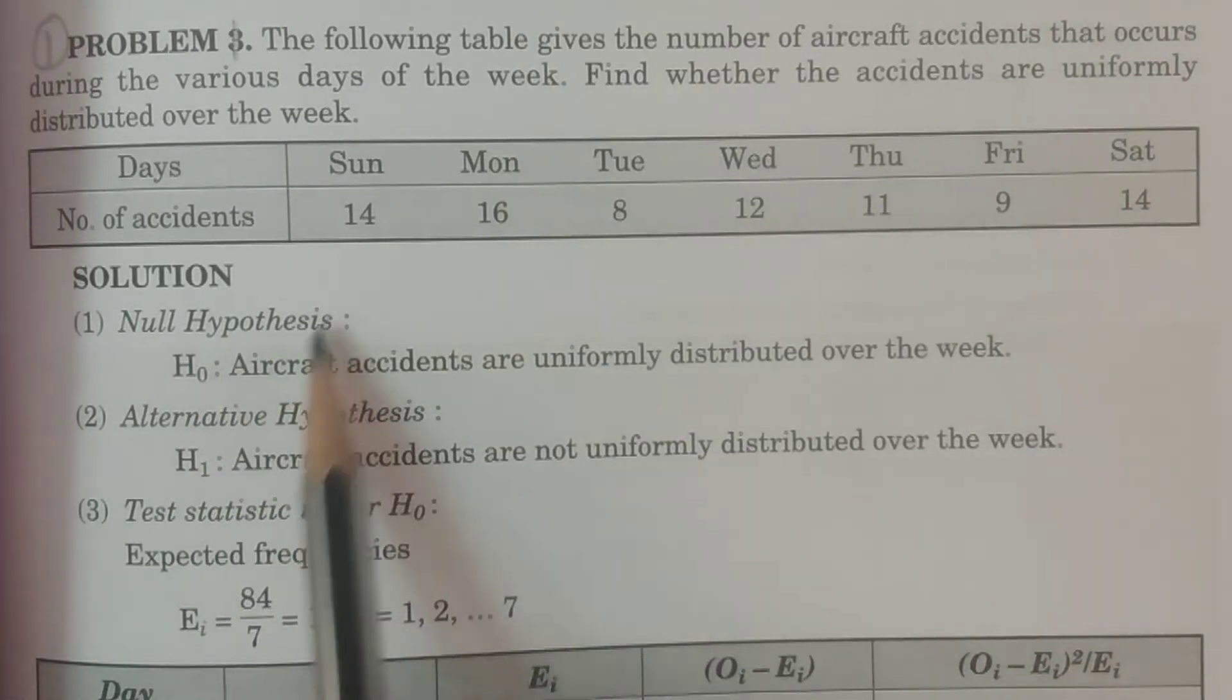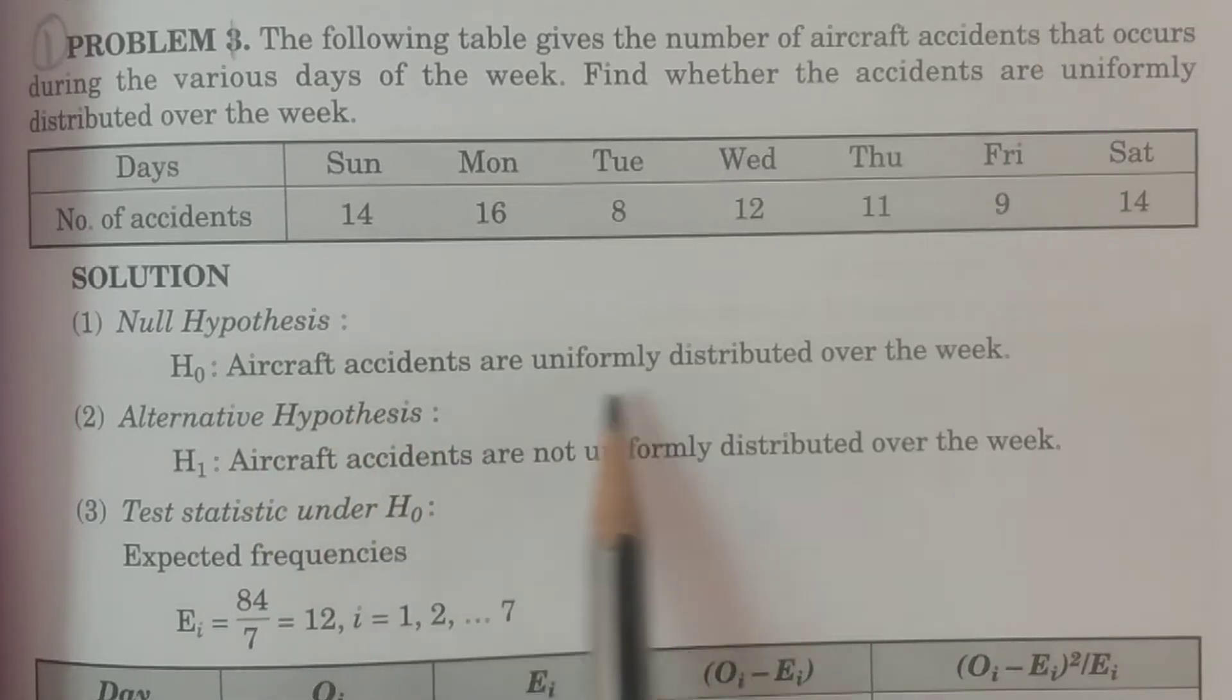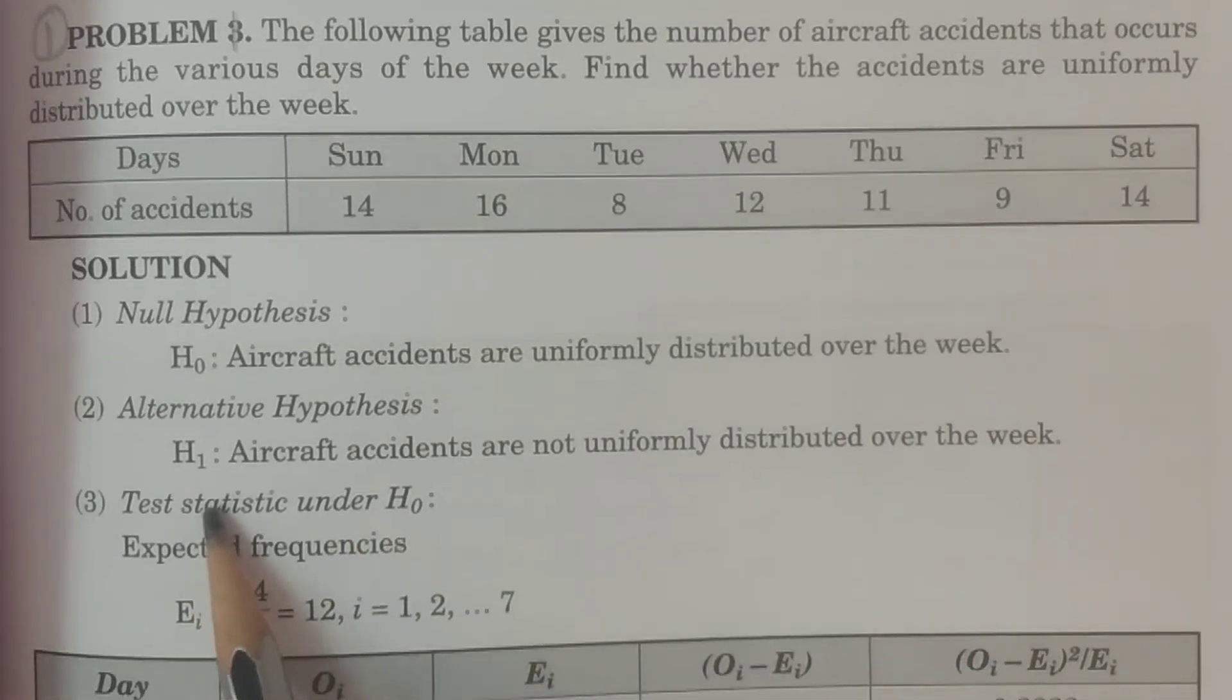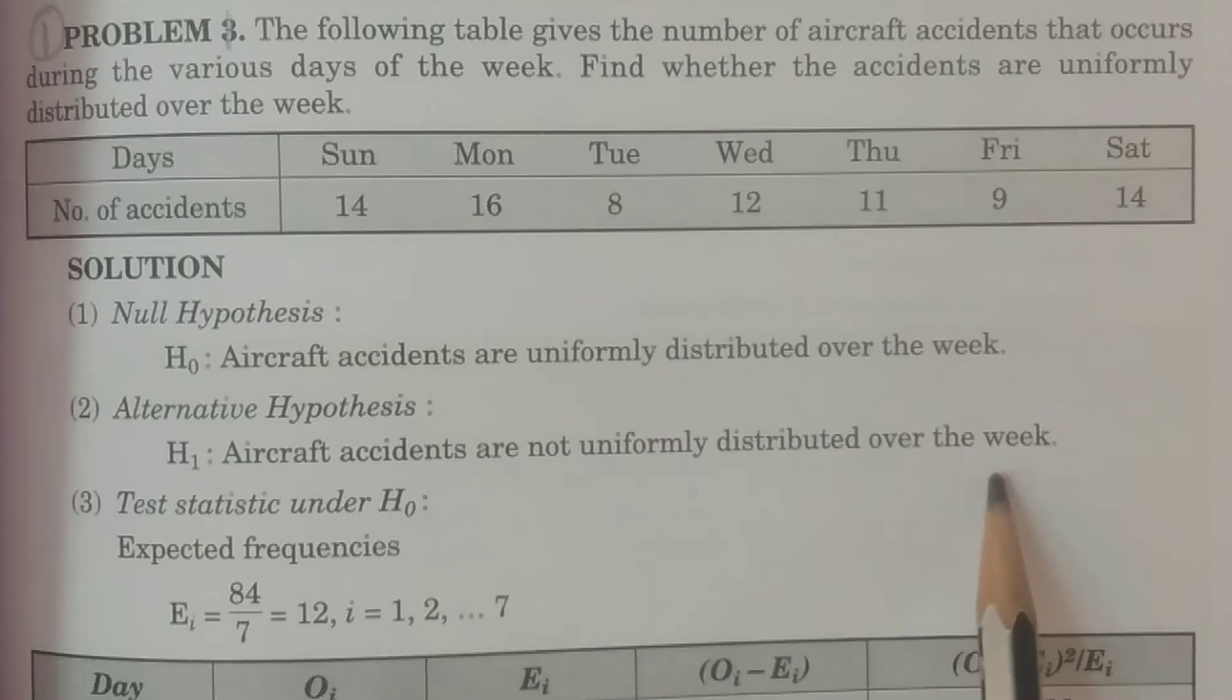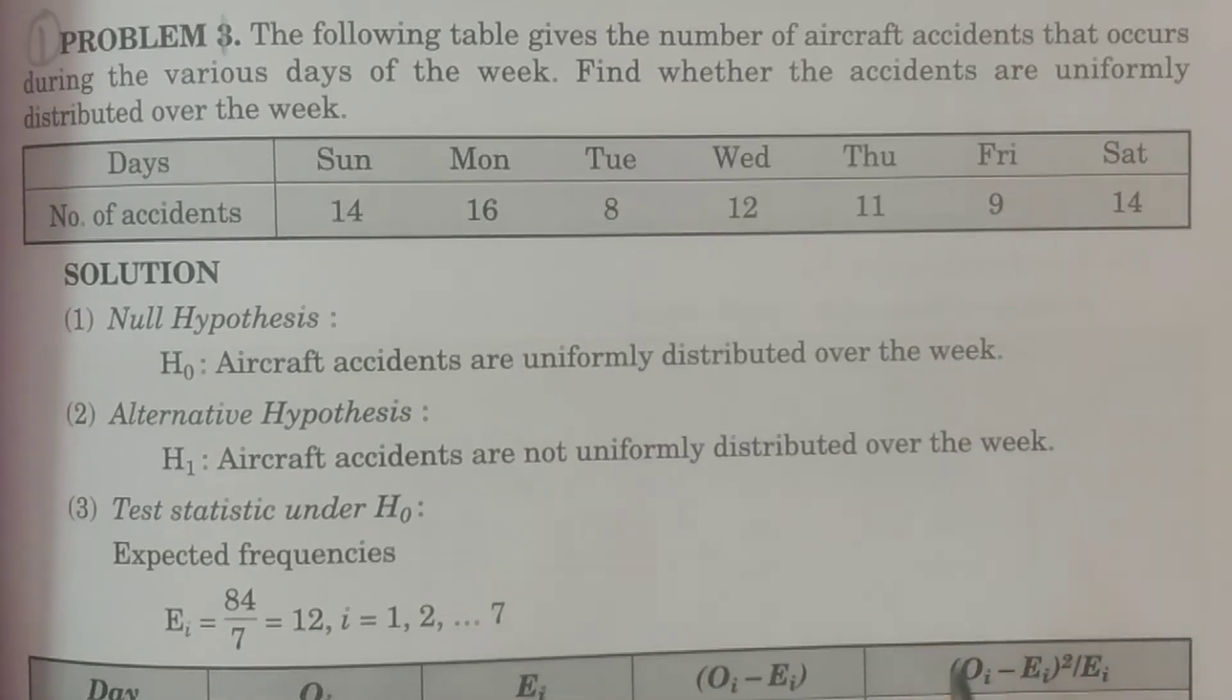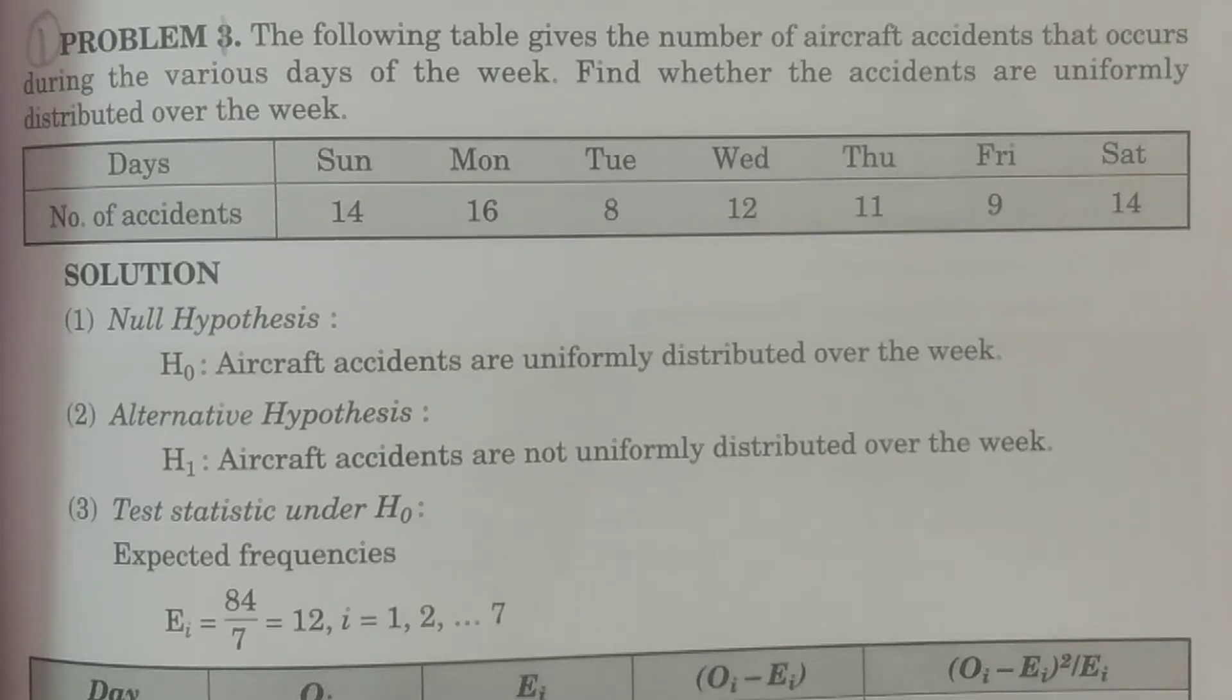You see here null hypothesis H0 we are considering as per the question, aircraft accidents are uniformly distributed over the week. And alternative hypothesis H1, aircraft accidents are not uniformly distributed over the week. So with which very simple null and alternative hypothesis are going to be considered. So it is one of the advantages to us.